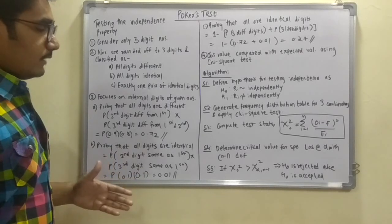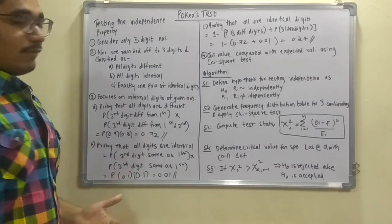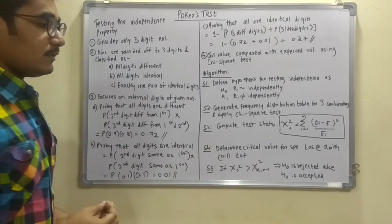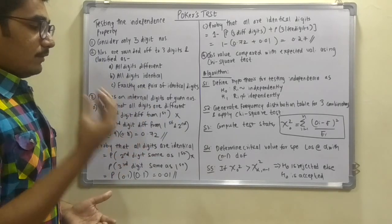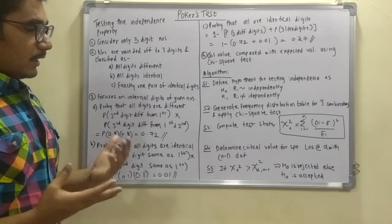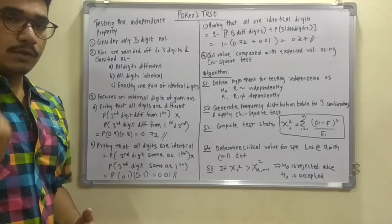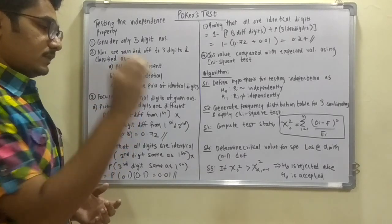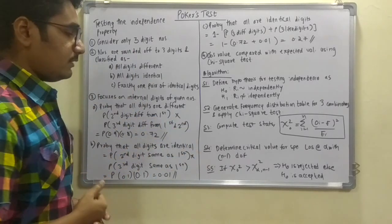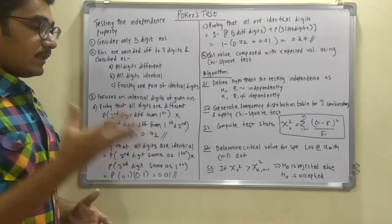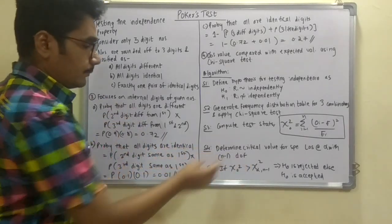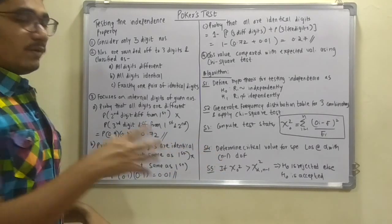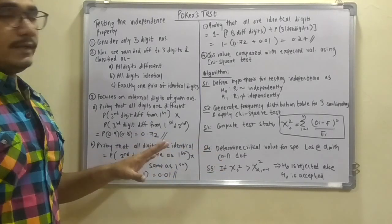After you compute that value then you have to determine the critical value for the specified level of significance alpha with n minus 1 degrees of freedom. After you compute that you will get some particular value, that is a threshold. By using the threshold you can determine whether H0 is rejected or H0 is accepted. It says that if chi-0 square is greater than chi-alpha square of n minus 1, that is the computed value of yours, if it is greater than this one then H0 is rejected, else it is accepted.